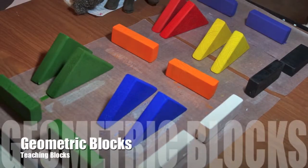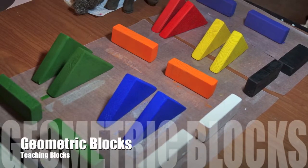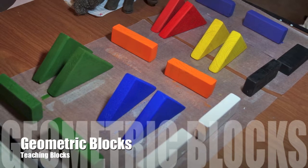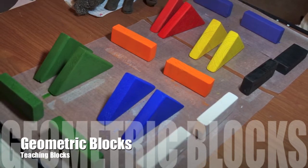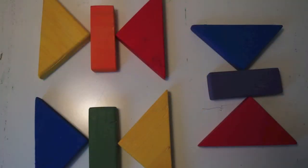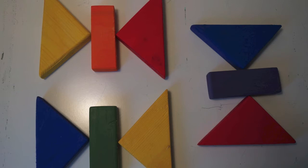The next set of blocks are geometric for the purposes of teaching the basic colors and geometric shapes. Since I already had cubes with the previous set of gradient blocks to represent a square, I just did triangles and rectangles in this set. I will add circles later.